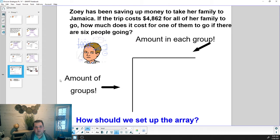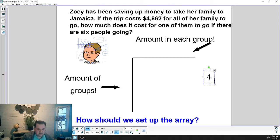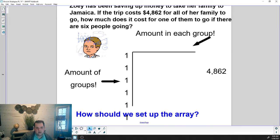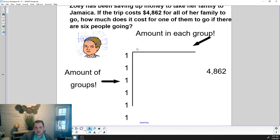Let's go ahead and start solving it. Remember, we need to get 4,862 inside of our array. This time we know the amount of groups—there's six people—but we don't know the amount in each group. So our answer is going to be here and we're going to put our people here. I've got my six people and I'm going to erase this here so we've got some room to work. I'm going to start by putting $500 in each group.